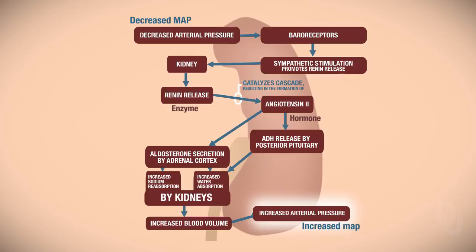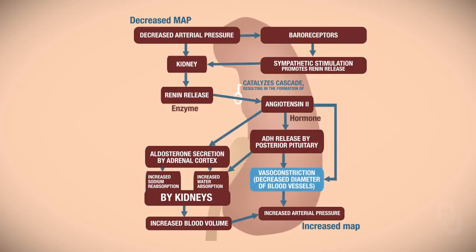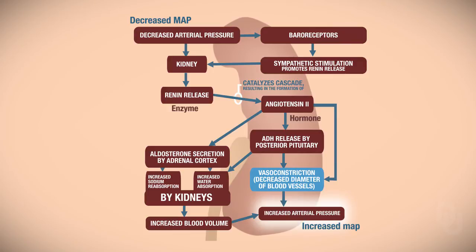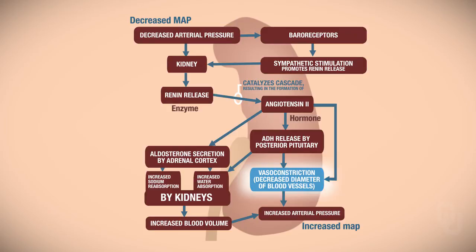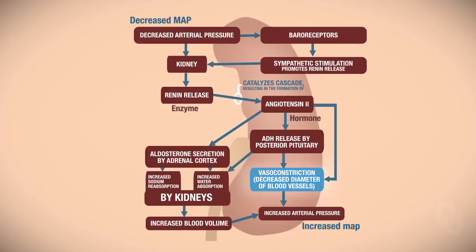There are also a couple of intrinsic controls here — I'll put these in blue. Angiotensin II causes vasoconstriction of the blood vessels, which is an intrinsic control. If the vessels vasoconstrict, that increases resistance, and when resistance increases, arterial pressure goes up. Additionally, ADH can also cause vasoconstriction intrinsically. So both angiotensin II and ADH can cause vasoconstriction, which increases resistance and increases MAP. This is the long-term mechanism using the kidneys to regulate mean arterial pressure.